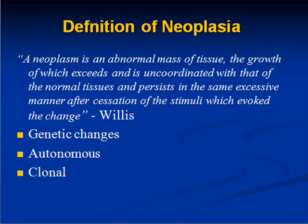Every pathologist could define cancer in his own words, but here is probably the best possible way it has been put. A neoplasm is an abnormal mass of tissue, the growth of which exceeds and is uncoordinated with that of the normal tissues, and persists in the same excessive manner after cessation of the stimuli which evoked the change. This is Willis' definition.